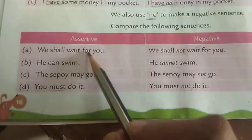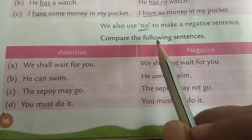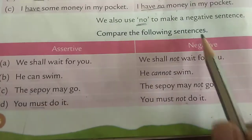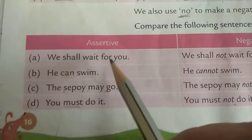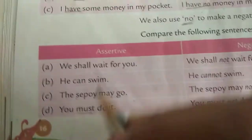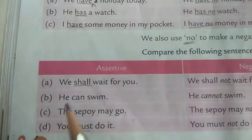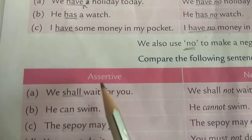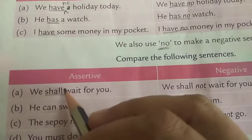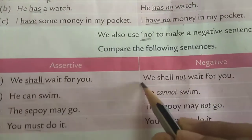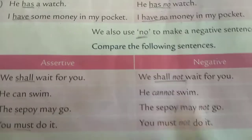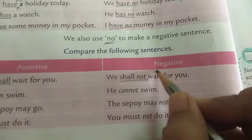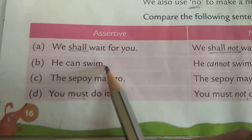Now let us see this second table. Compare the assertive and negative sentences given. First sentence: 'We shall wait for you.' The helping verb is 'shall'. After the helping verb we add 'not': 'We shall not wait for you.'